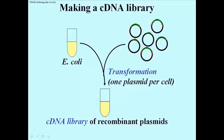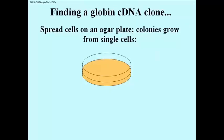How do you pick out of your library a clone that has something that you want, that you can clone a lot of? So how do you find, in this case, a globin cDNA clone?